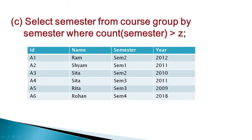Option C: SELECT semester FROM course GROUP BY semester WHERE COUNT(semester) > z. We counted semester earlier — the count can be greater than 1, 2, or 3, but it cannot be greater than 'z'. Only numerical values are valid here; alphabetical values like z are not valid. So this is our correct answer — this query is incorrect.